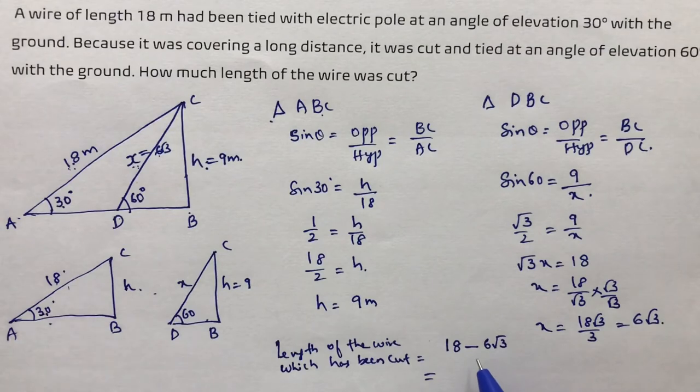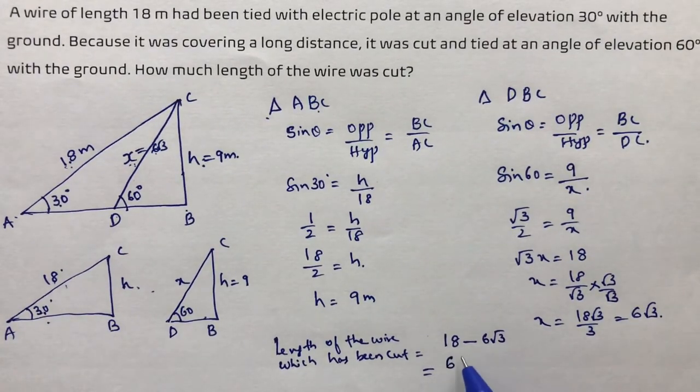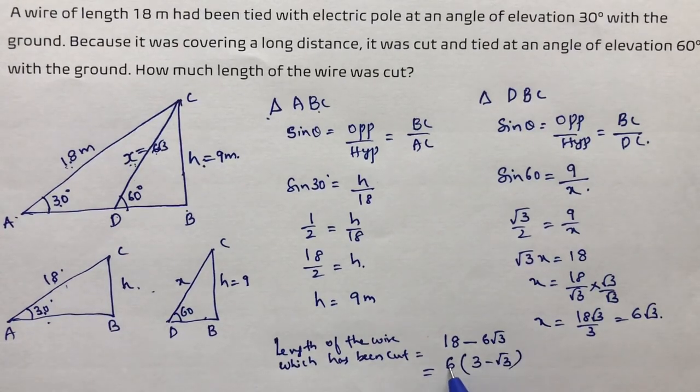If given the value of root 3, substitute it. Otherwise, factor out 6 to get 6 times (3 minus root 3) meters as the final answer.